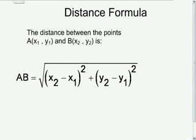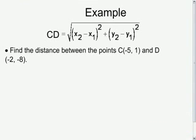Let's go ahead now and take a look at an actual example applying the distance formula. Here we are being asked to find the distance between the points C, which is (negative 5, 1), and D, which is (negative 2, negative 8).